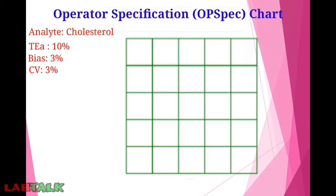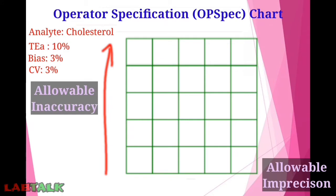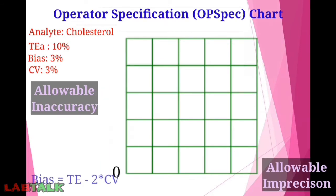Again using the cholesterol example with total allowable error 10%, bias 3%, and CV% 3%: consider a table with five columns and five rows as a grid. On the x-axis is allowable precision and on the y-axis is allowable inaccuracy, with the intercept at zero. First, consider the allowable inaccuracy on the y-axis — if CV% is zero, bias ranges up to the total allowable error, so we plot the point 10 on the y-axis.